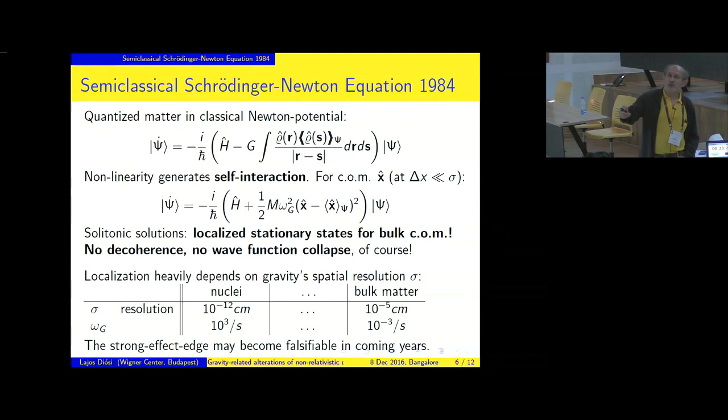So this introduces non-linearity of the equation, and this non-linearity generates self-interaction. It means that even for a single particle you get Newtonian self-interaction, which is not the case with the pair potential. If you apply the standard pair potential to a single particle situation, there is no interaction, no Newtonian force at all. So this non-linearity introduces self-interaction.